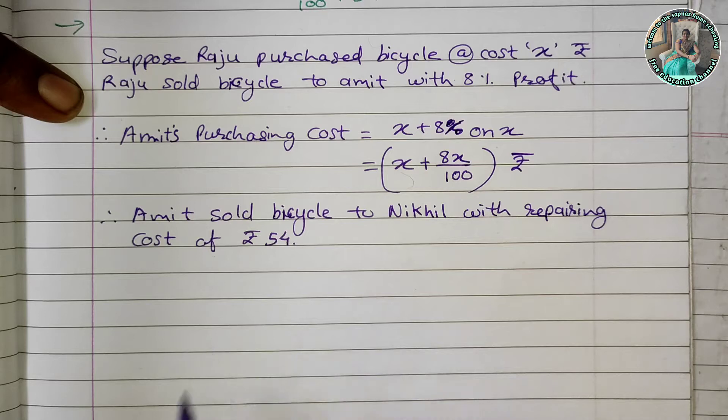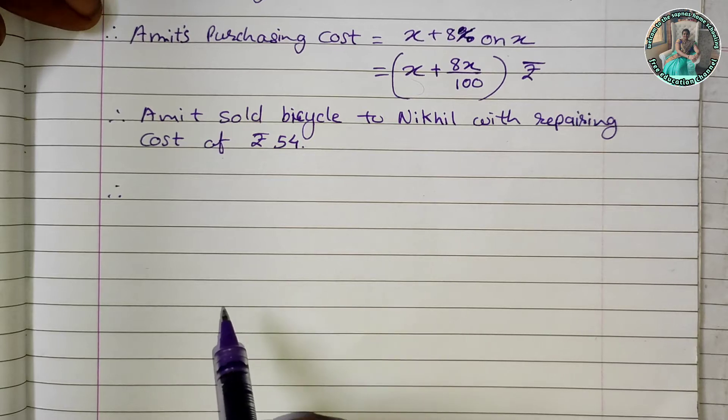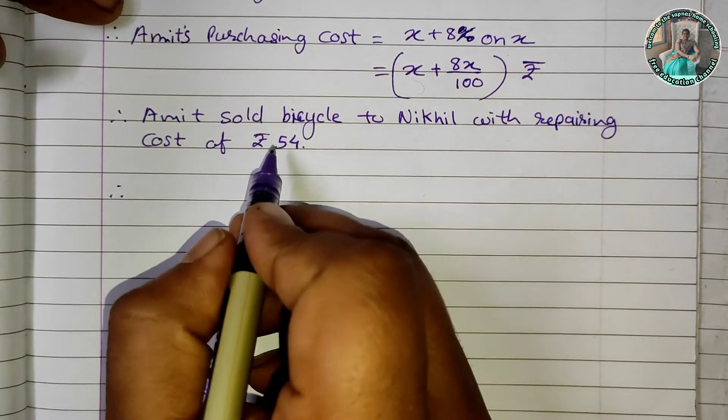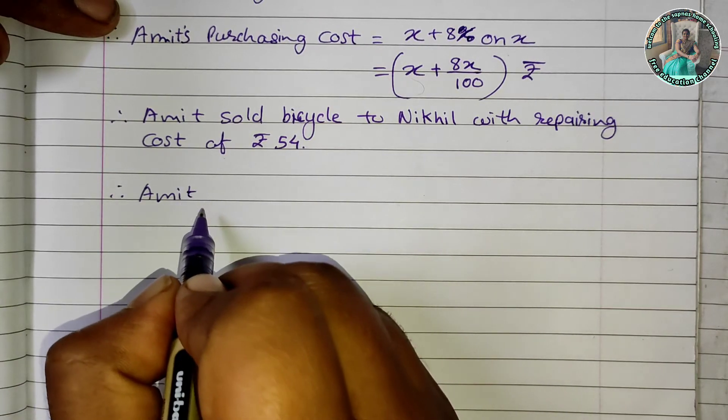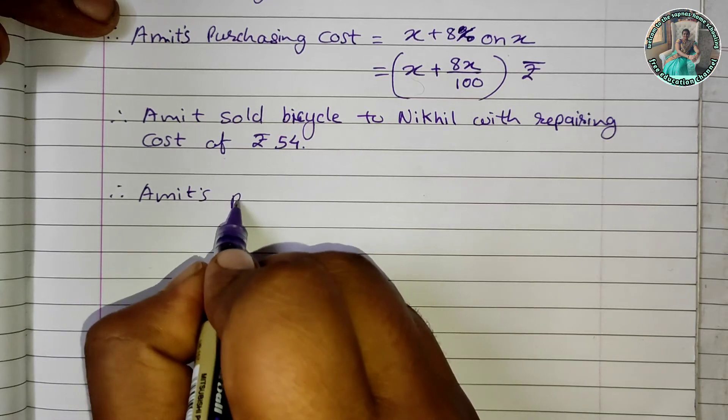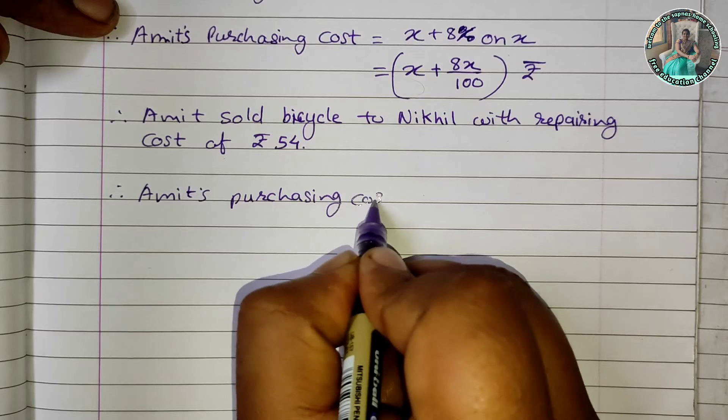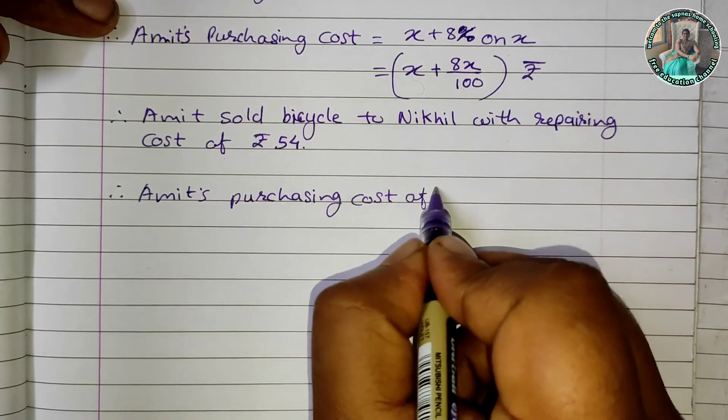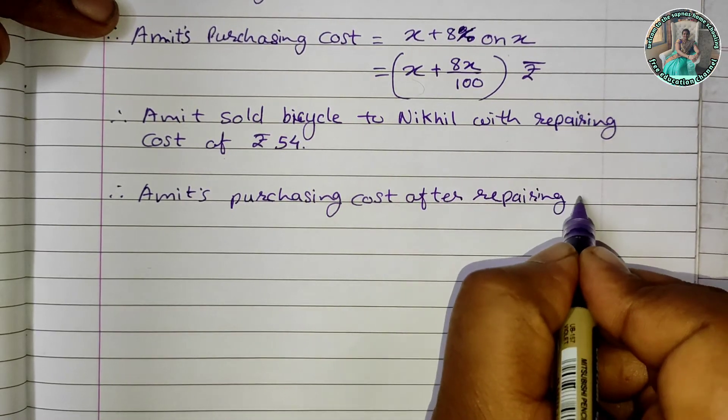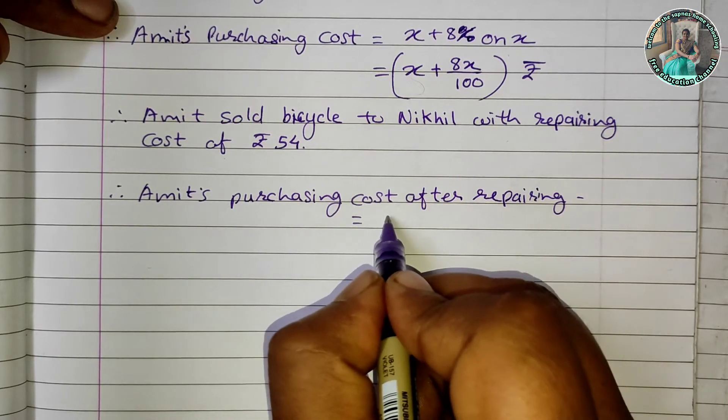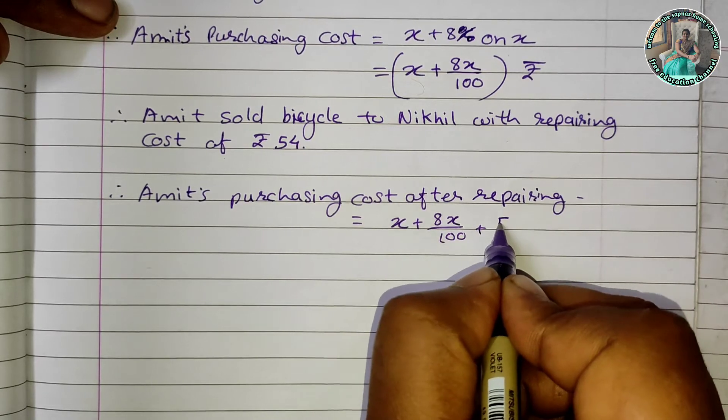Amit spent 54 rupees on repairs. So Amit's purchasing cost after repairing is equal to x plus 8x upon 100 plus 54.